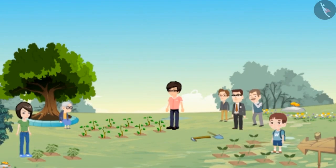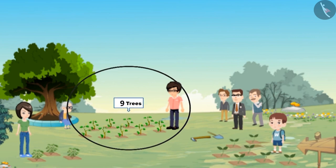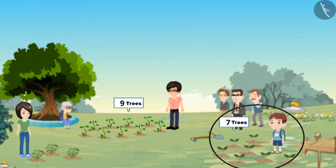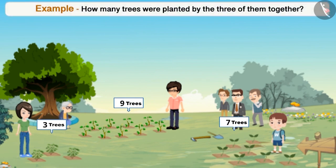During Van Mahotsav, Akash planted 9 trees, Ajay planted 7 trees, and Babita planted 3 trees. Can you tell how many trees were planted by the 3 of them together?